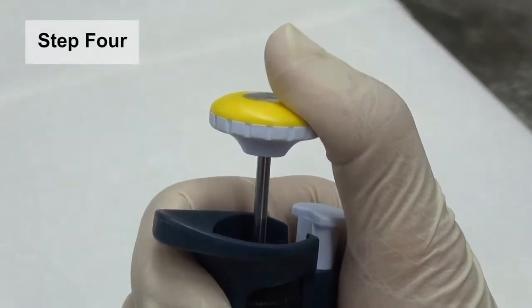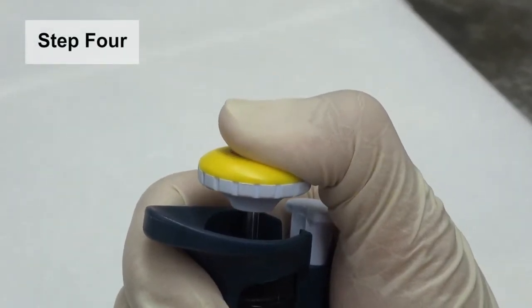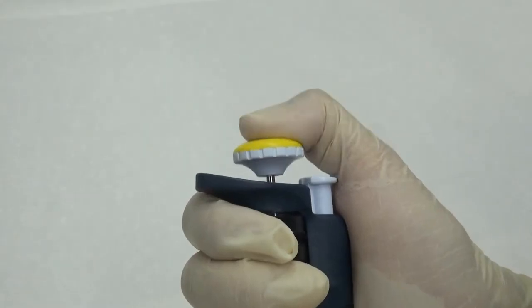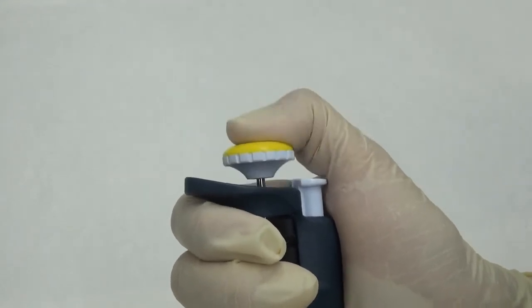Step 4. Gently press down the operating button until feeling a resistance. This is the first stop. Press harder down to reach the second stop. You may practice several times until you feel comfortable with it.